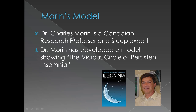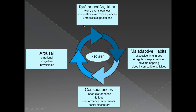Dr. Charles Morin is a Canadian research professor and sleep expert. He developed a model showing the vicious circle of persistent insomnia. It is a cycle: first, there is insomnia — the perpetuation of acute insomnia — which leads to dysfunctional cognitions such as worry over sleep loss, rumination over consequences, and unrealistic expectations, as well as maladaptive habits such as excessive time in bed, irregular sleep schedule, daytime napping, and sleep-incompatible activities. These lead to consequences such as mood disturbances, fatigue, performance impairments, and social discomfort — all contributing to body and mind arousal: emotional, cognitive, and physiologic. This is Dr. Morin's persistent circle of insomnia.